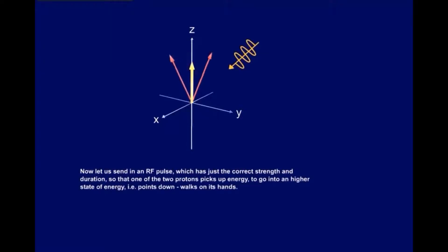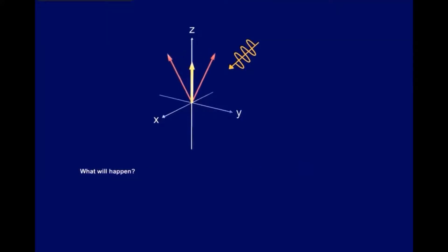Now let us send in an RF pulse, which is just the correct strength and duration, so that one of the two protons picks up energy to go into a higher state of energy. In other words, points down, walks on its hands. What will happen? To find out, just activate the RF pulse by clicking on it.